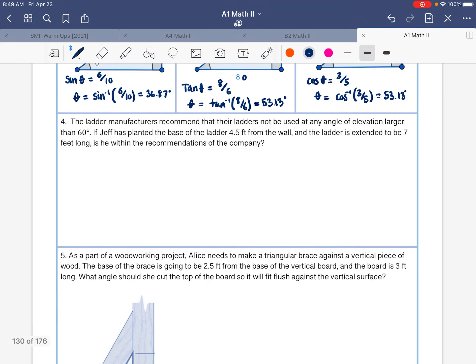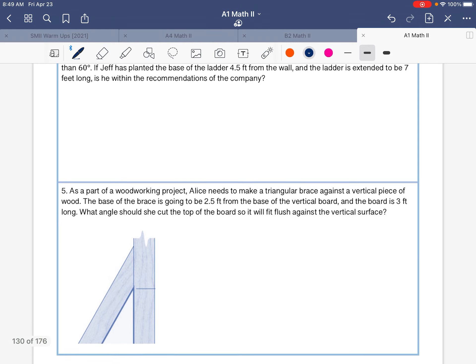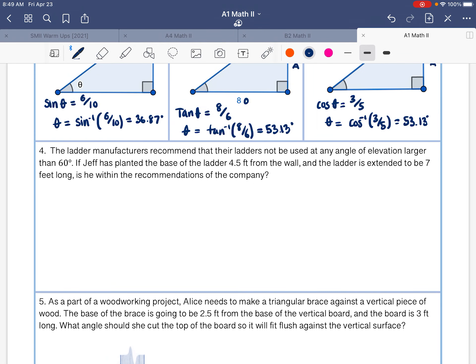Okay, so now we have a couple of word problems here. The same math is involved, but now we're just taking more words, and we have to draw our own triangle. So number four says, the ladder manufacturers recommend that their ladders not be used at any angle of elevation larger than 60 degrees. If Jeff has planted the base of the ladder four and a half feet from the wall. So here's our triangle.